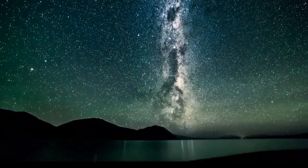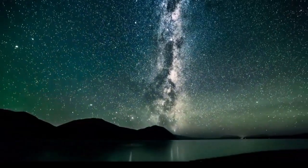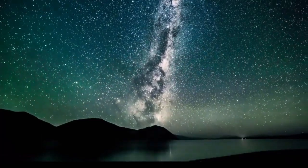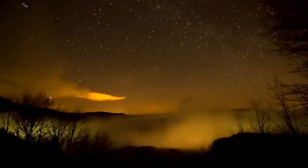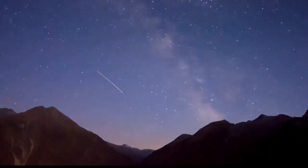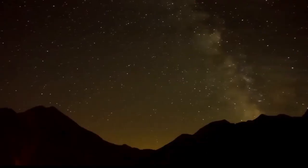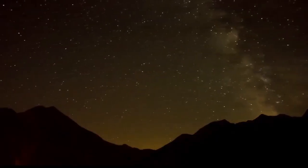The thousands of twinkling stars that we observe in the clear night sky are part of our Milky Way. Some of the stars that we see are bright whereas others are faint. Stars radiating different colors such as blue, white, yellow, and reddish can be seen in the sky. We also see stars with varying brightness.